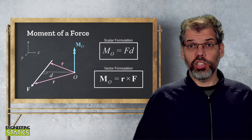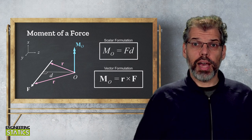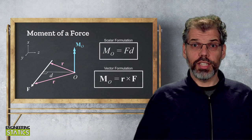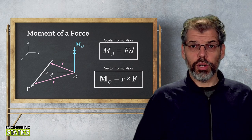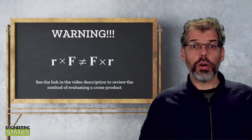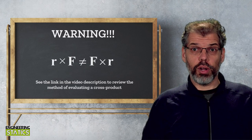For scalar multiplication, the order of these terms does not matter. f multiplied by d is equal to d multiplied by f. But this is not true for the cross product. r cross f does not equal f cross r.